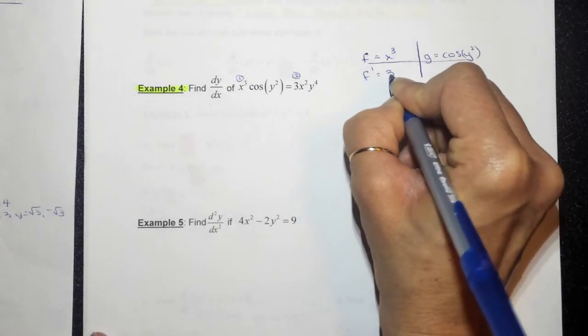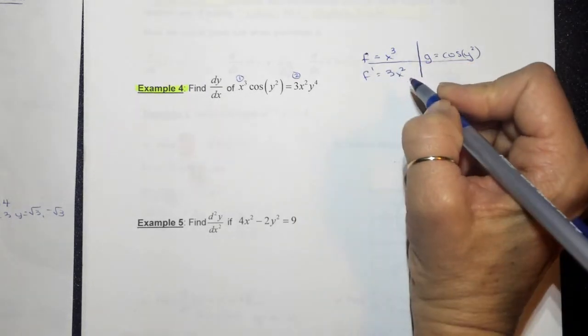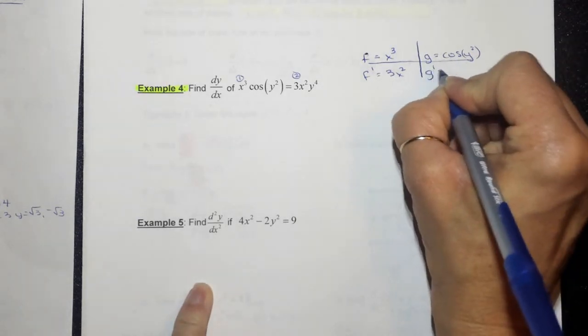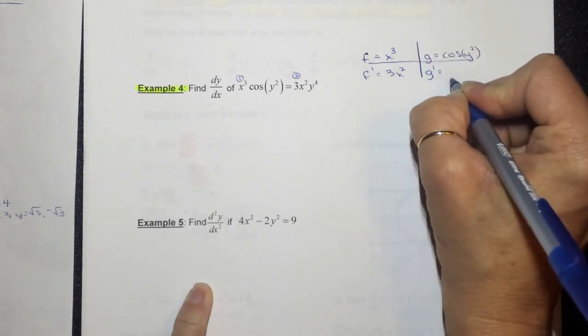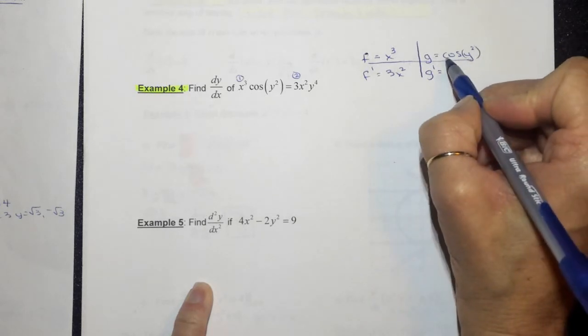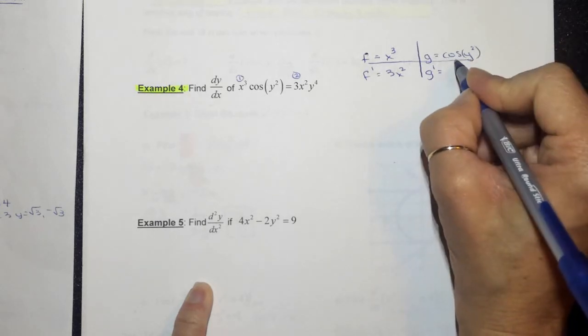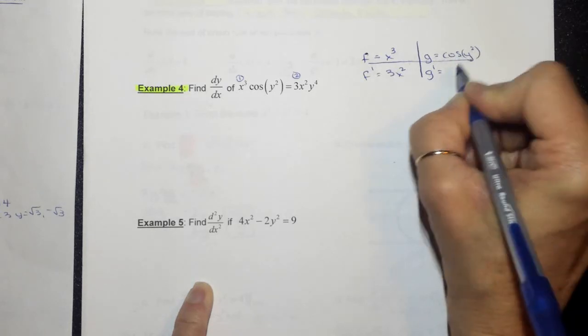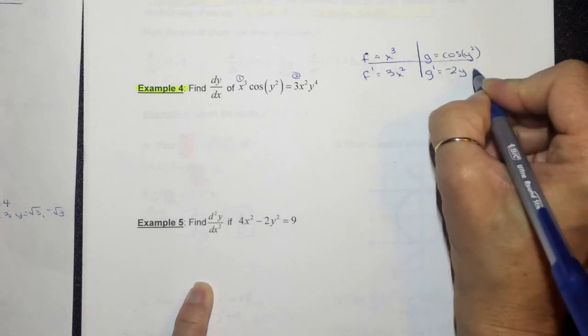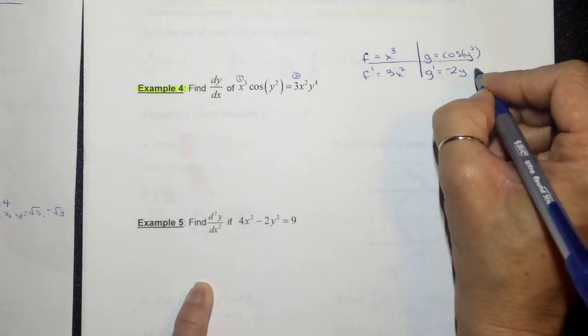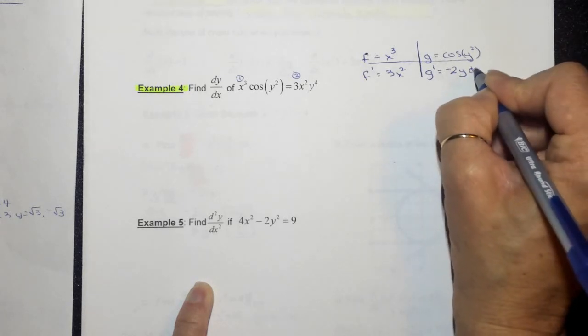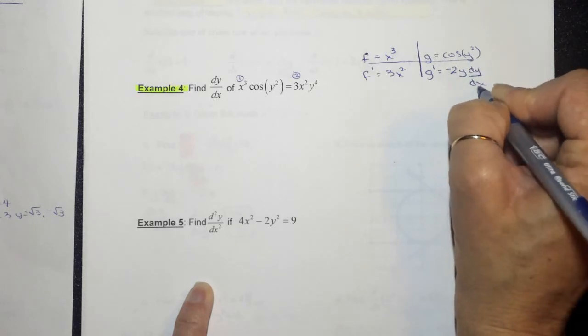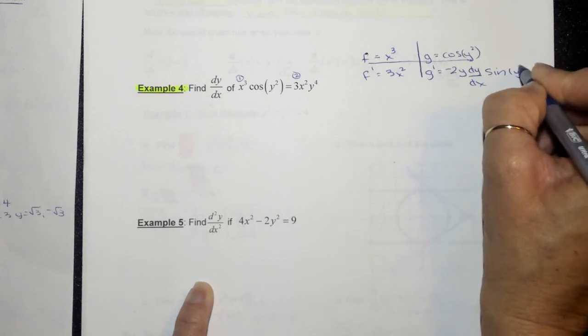So f prime is equal to 3x squared, essentially dx dx, but I don't need to write dx dx. g prime is going to be, let's see, when I take the derivative of cosine, it becomes negative sine of y squared. And then the derivative of this is 2y. So negative 2y sine of y squared dy dx. Because when you take the derivative of y, it's dy dx.